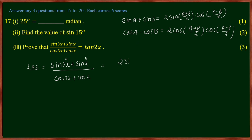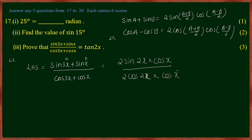Applying the first equation to the numerator: 2 sin((3x+x)/2) cos((3x-x)/2) = 2 sin 2x cos x. For the denominator with cos 3x plus cos x: 2 cos((3x+x)/2) cos((3x-x)/2) = 2 cos 2x cos x. So we get 2 sin 2x cos x divided by 2 cos 2x cos x, which simplifies to sin 2x by cos 2x = tan 2x.